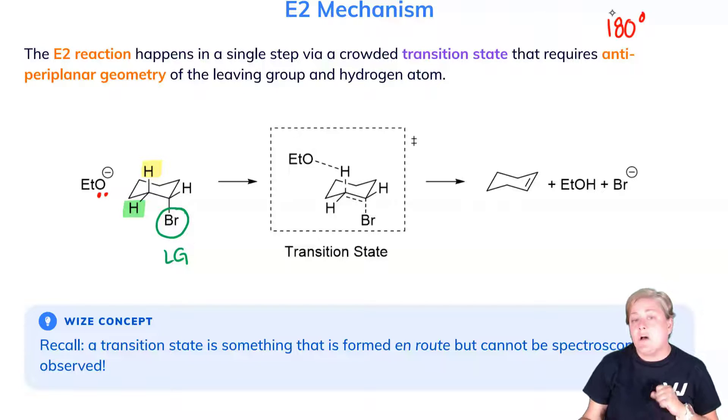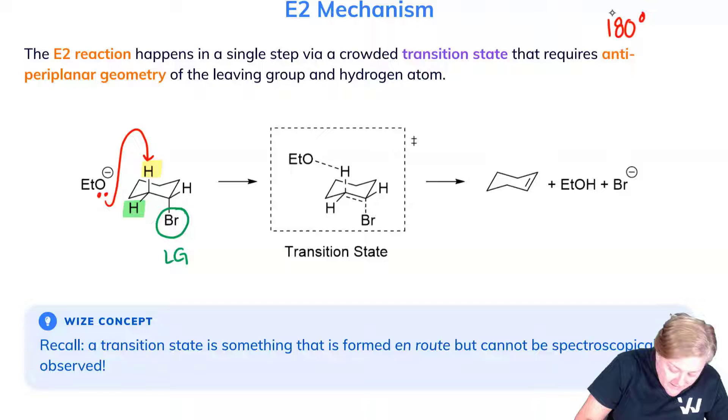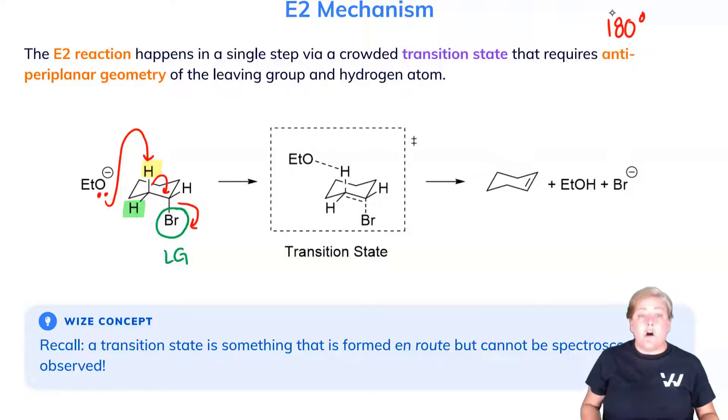And so now I'm able to draw the mechanism abstracting the correct hydrogen. Here the lone pair will take this hydrogen atom and will form the alkene, and the leaving group will depart all in a single step. So you're noticing that there's three arrows going on. I have two electrons from the O- going to make a new oxygen-hydrogen bond. The two electrons that were in the CH bond will go to make the new alkene. And the two electrons in the CBR bond will leave with the bromine to give an anionic bromide leaving group.